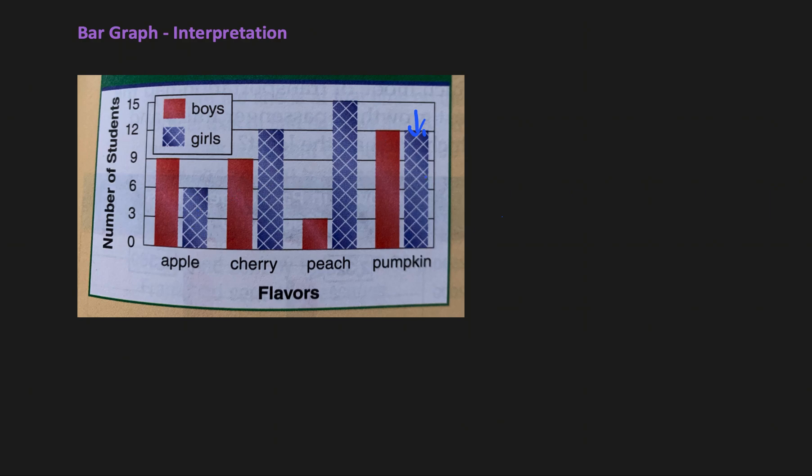Usually, if there are multiple bars, so in this case there are two bars, each bar will have a different color so it's easier to distinguish between different groups. In this case, red is boys and this checkered box with the blue color is for girls.